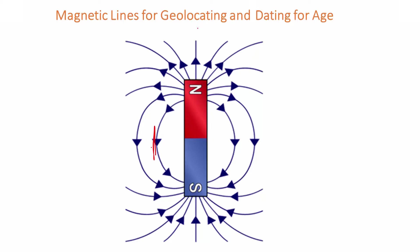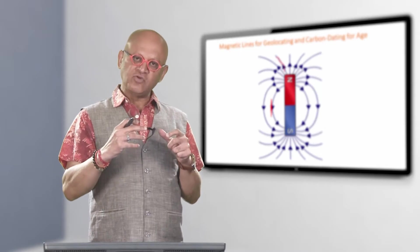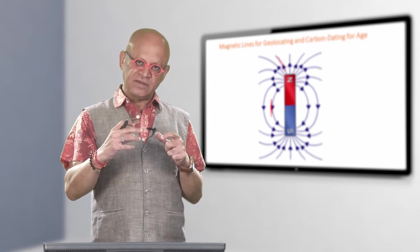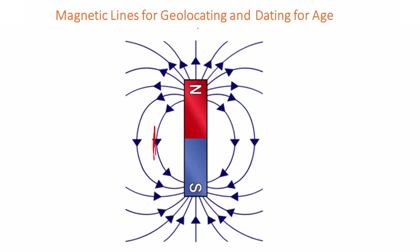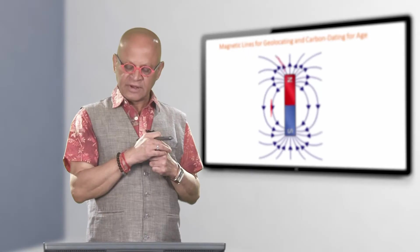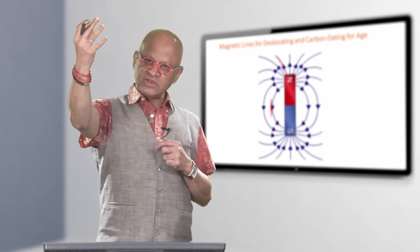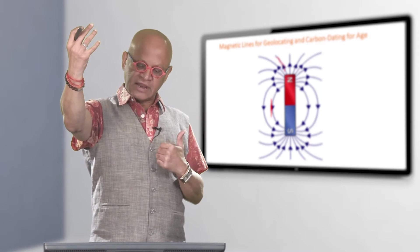If the rock that you find has a low angle magnetic field, that means the rock was at a low latitude. If it has high angle magnetic lines, that means it was at a higher latitude, because the north pole is at high latitude and the south pole is at high latitude.